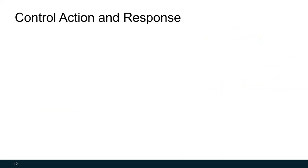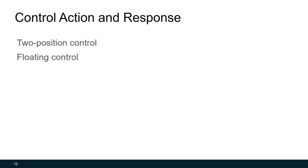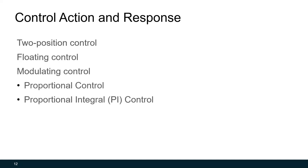The next section covers control action and response — how our controllers are set to react to changes in the controlled variable and how quickly they respond to reach set point. We'll be going through two-position control, floating control, and modulating control. In fact, we'll cover two types of modulating control: proportional control and proportional integral control. But first, let's cover perfect control.